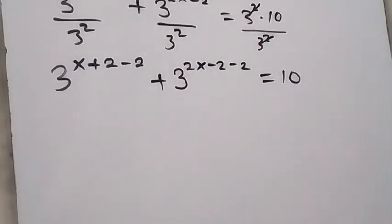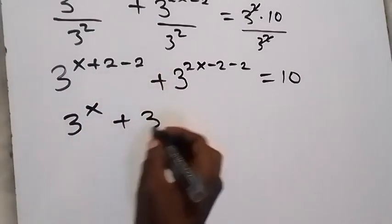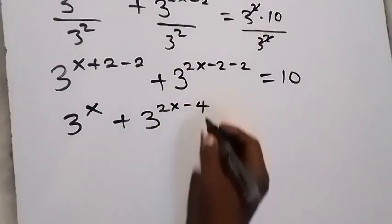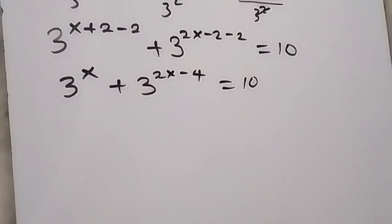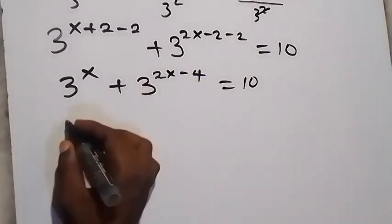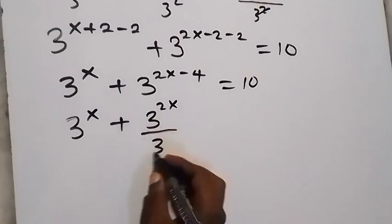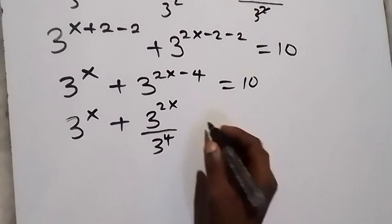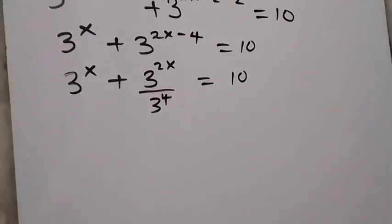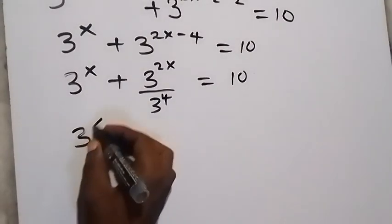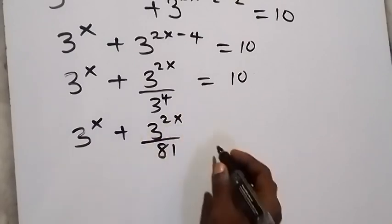The next step: this reduces to 3 raised to power x, plus 3 raised to power 2x minus 4, equals 10. We can reverse the law of indices to write 3 raised to power 2x minus 4 as 3 raised to power 2x divided by 3 raised to power 4. Since 3 raised to power 4 equals 81, we have 3 raised to power x plus 3 raised to power 2x over 81, equals 10.